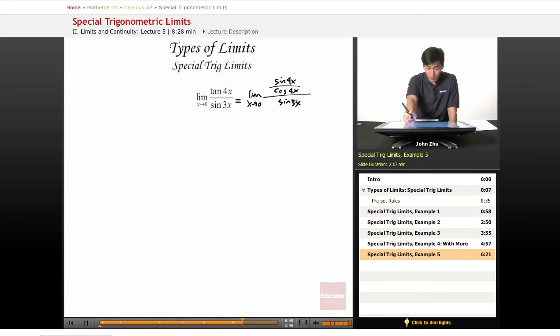And if we look at this expression here, we can split them up or simplify it into limit as x approaches 0 of sine of 4x over cosine of 4x times limit as x approaches 0, 1 over sine of 3x.